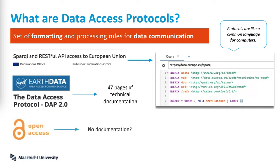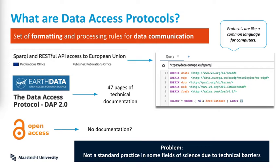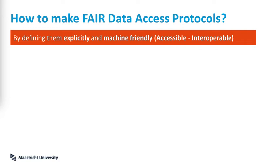And if a dataset is open access, people don't put documentation because, well, it's open access, right? The problem is that it's not a standard practice in some fields due to technical barriers, which lead researchers to actually collect new data instead of reusing. So how do we make FAIR data access protocols? By defining them explicitly and, again, in a machine-friendly way so it's accessible and interoperable.